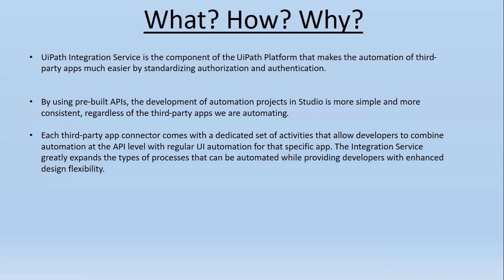Why do we need to use it? Each third-party app connector comes with a dedicated set of activities. Instead of going through entire API documentation on how to call that API, what to pass and what not to pass, we can simply drag and drop those activities to utilize the services offered by third-party apps. This allows developers to combine API-level automation with UI interaction. The integration service greatly expands the type of processes that can be automated while providing developers with enhanced design flexibility. We can start by enabling integration service in our automation cloud.